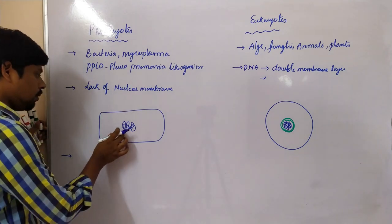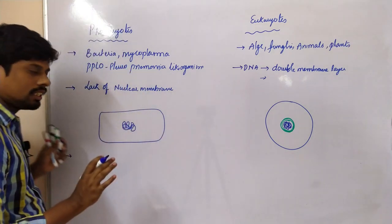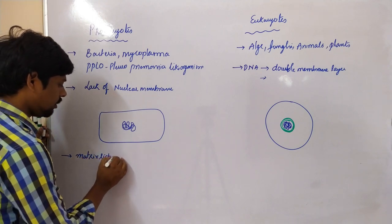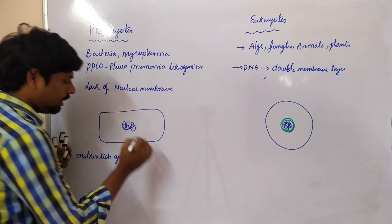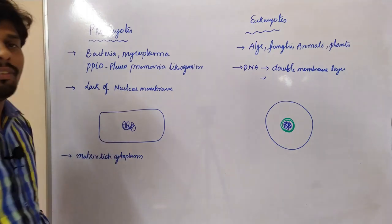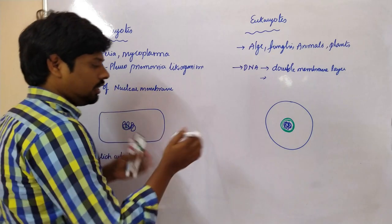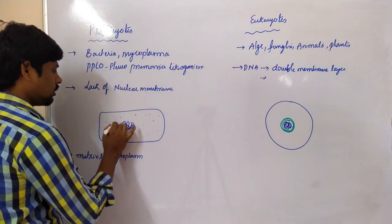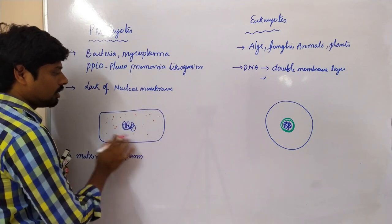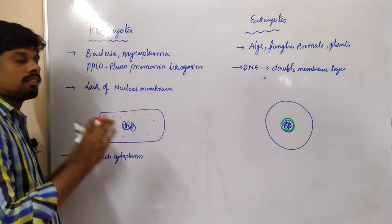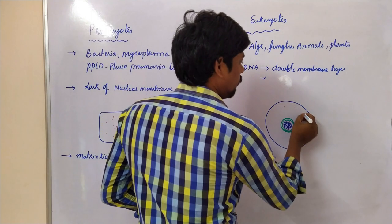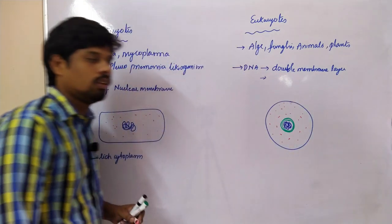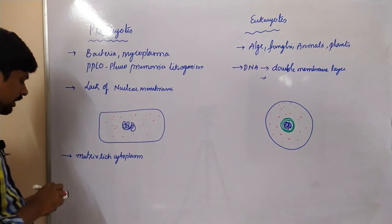Both prokaryotes and eukaryotes contain a matrix-rich cytoplasm. The dense cytoplasm is present in both. Whatever space is present in the cell — in both prokaryotes and eukaryotes — is occupied by the cytoplasm.